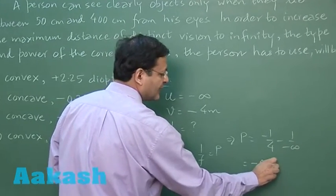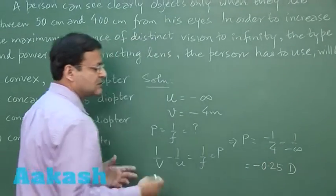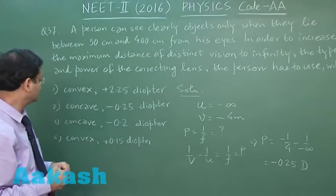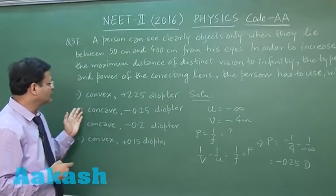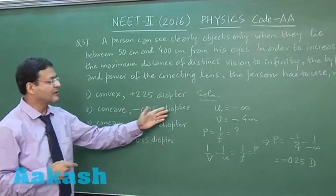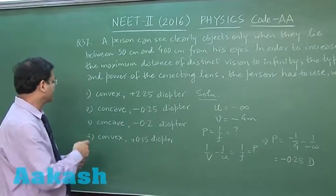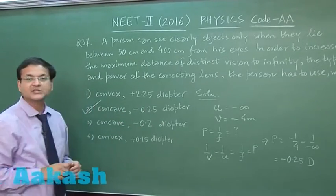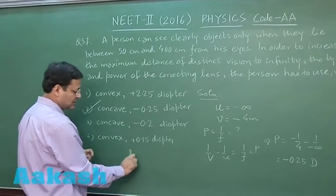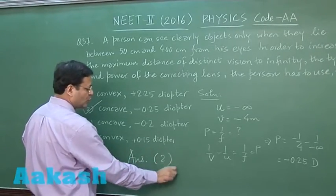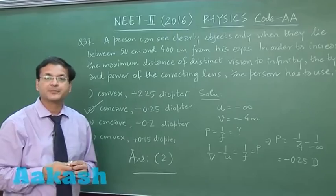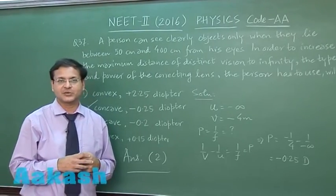So that comes out to be -0.25 diopter. So this is a concave lens, isn't it. So you have to use concave lens of -0.25 diopter. This is what is there, so I will be marking answer 2 for this question. Answer will be 2 for this question 37. Now let us switch over to next question, that is question 38.